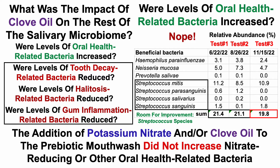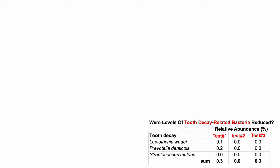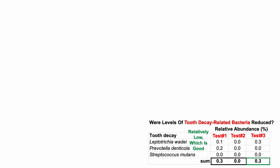What about the reds — tooth decay, halitosis, and gum inflammation-related bacteria? Looking at tooth decay-related bacteria, for the first two tests I had relatively low levels of these three linked bacteria at 0.3% and lower. For test number three, it went back up to 0.3%, but that's still relatively low, which is good news.